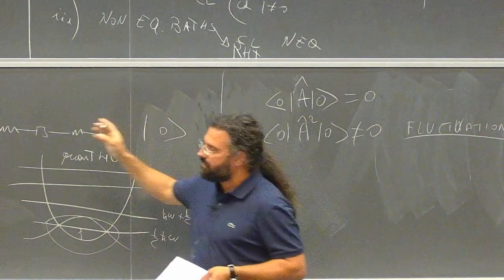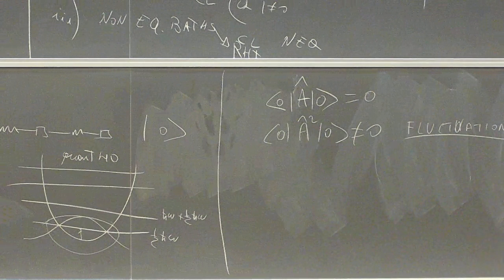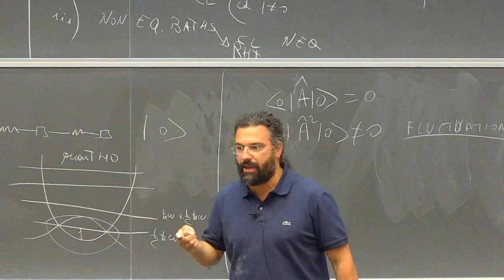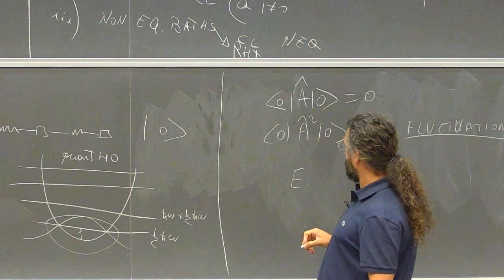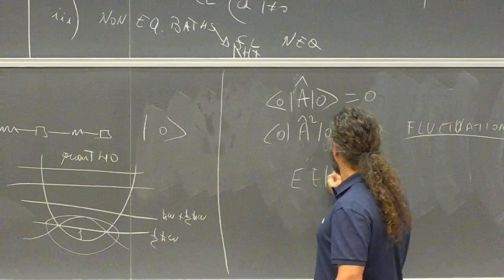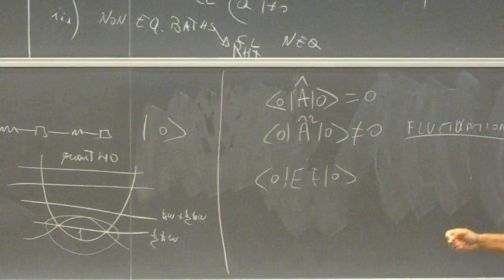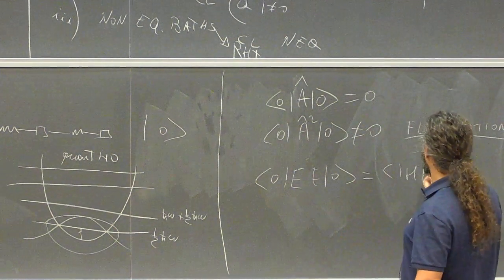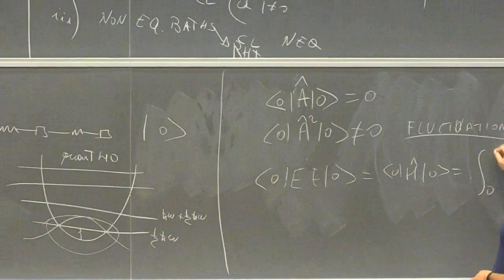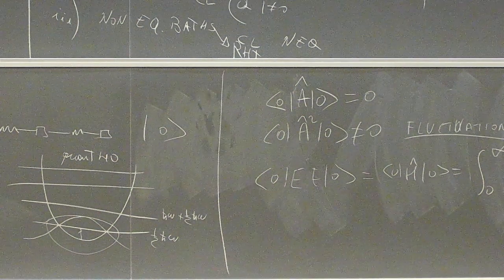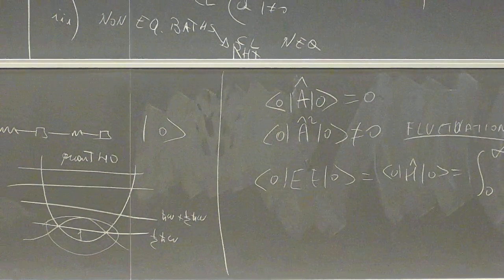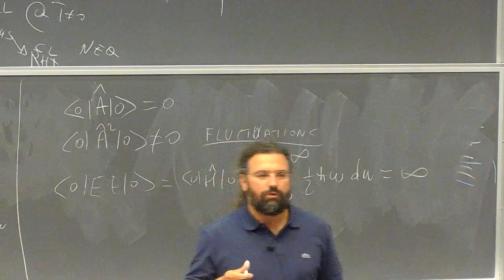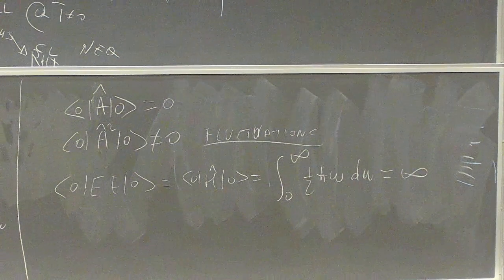If you consider all these oscillators with one-half ℏω for all possible frequencies from zero to infinity, the energy of the electromagnetic field — proportional to E² — is not only nonzero but if you sum over all frequencies it is infinite. The average value of the Hamiltonian is the integral from zero to infinity of one-half ℏω dω, and this is infinite. This raises some problems, but we do not worry so much because there is always a way to renormalize things and get rid of this infinity.